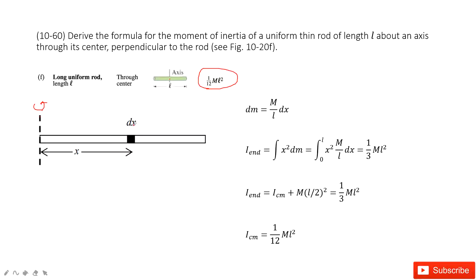And for each section, the length is dx. The mass for this section is dm. It's just density times dx. The density is total mass divided by l.